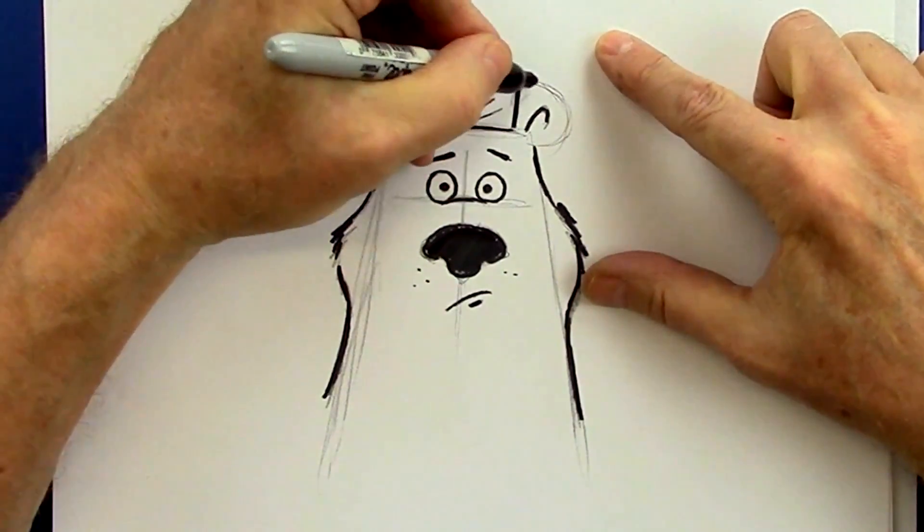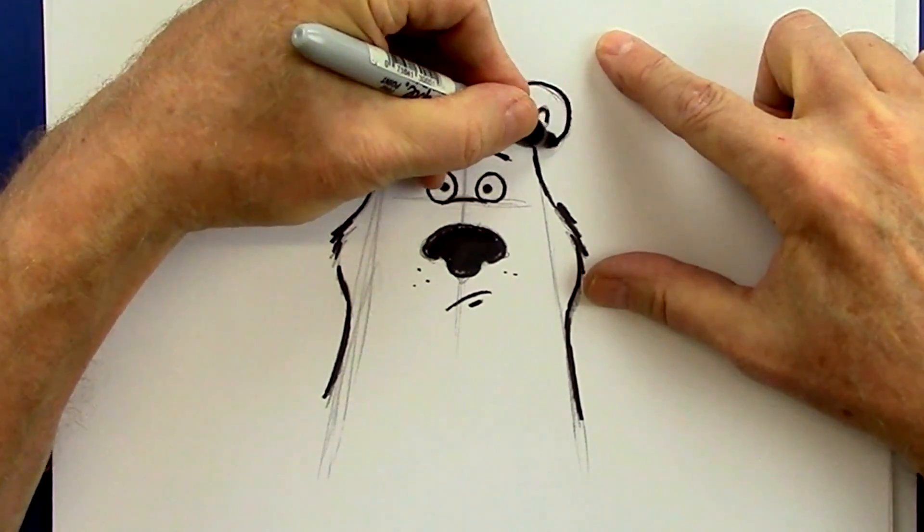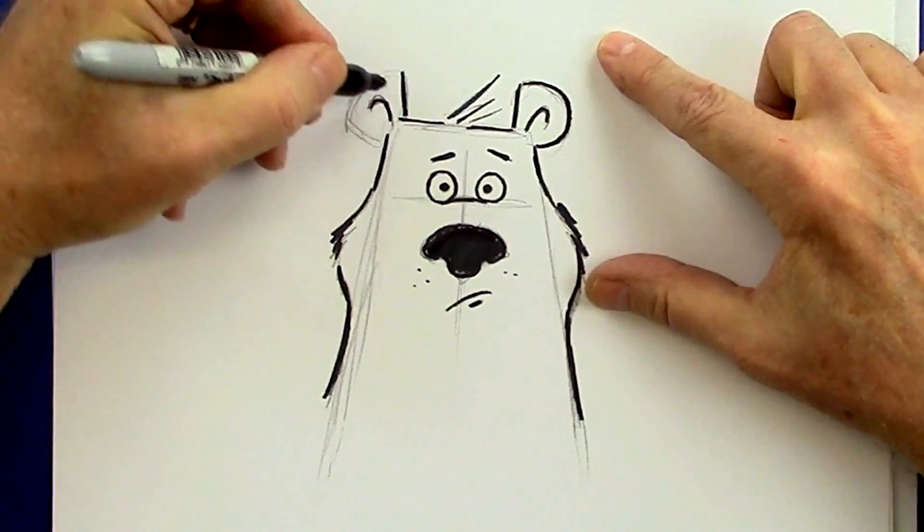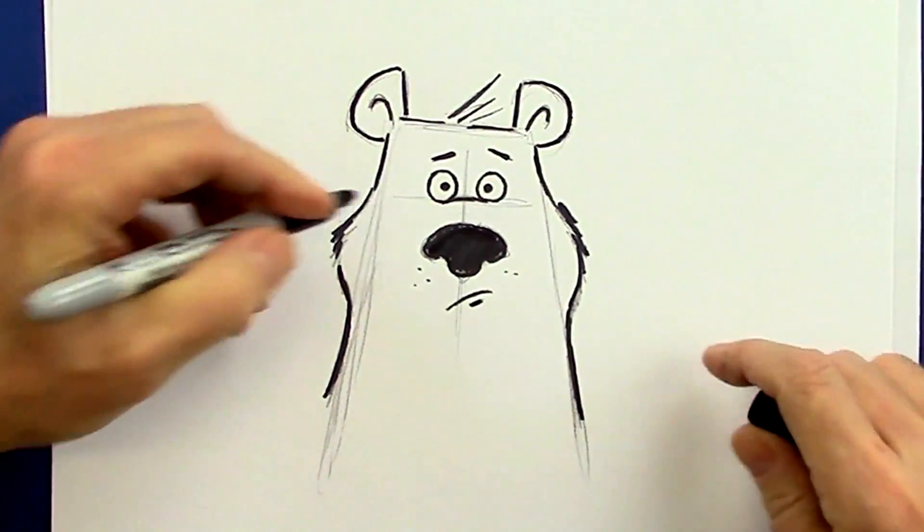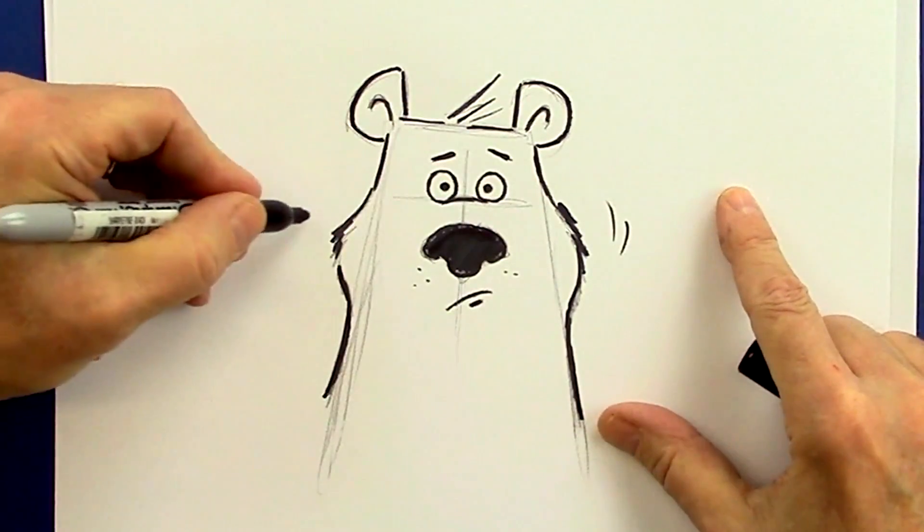And kind of almost an angular look to these ears even though they're rounded basically. Also do a flat side on the top. It's just kind of funny. And some motion lines on the side.